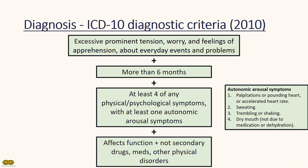For ICD-10, the criteria is quite similar but patients would require 4 of any of the physical or psychological symptoms with at least one autonomic arousal symptom. The key takeaway is that physical and psychological symptoms have to last more than 6 months such that it affects function or activities of daily living, and is not secondary to drugs, medications or organic diseases.